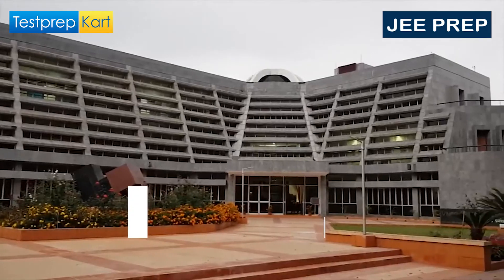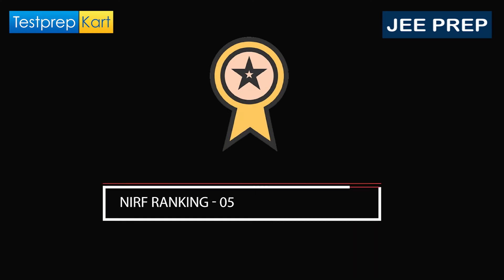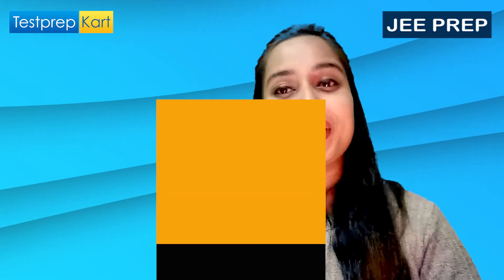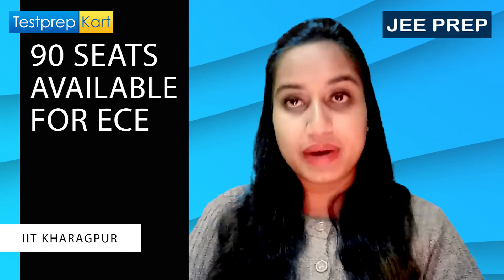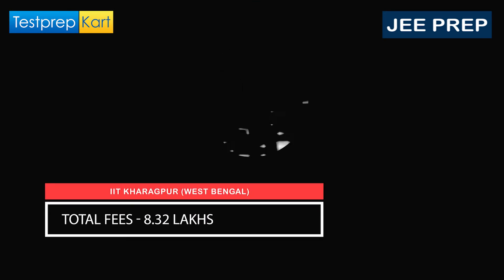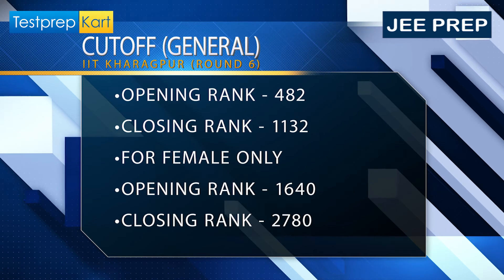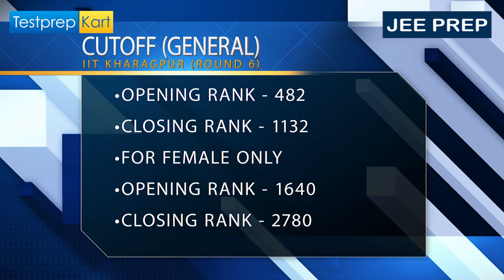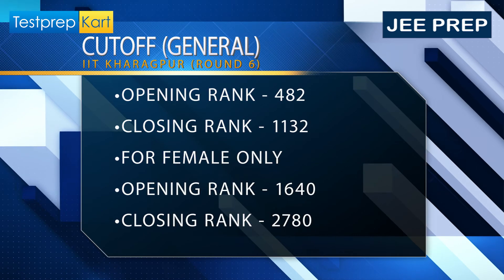Next we have IIT Kharagpur, which is in West Bengal, with a NIRF ranking of 5. The seats available for the ECE branch are 90, and the total fees is around 8.32 lakhs. The 2021 Round 6 general category gender-neutral cutoff had an opening rank of 482 and a closing rank of 1132. For girls, the opening rank was 1640 and the closing rank was 2780.